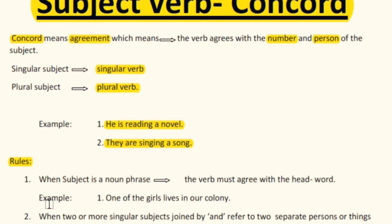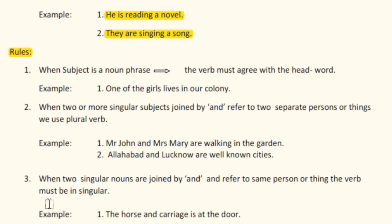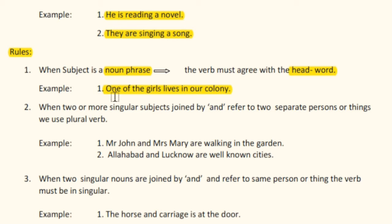Rule number one: when the subject is a noun phrase, the verb must agree with the head word. For example, 'One of the girls lives in our colony.' In this sentence, the real subject — the head word — is 'one', not 'girls', so the verb agrees with the head word 'one'.